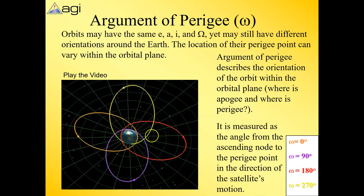You can see that all these orbits have the same period, but where their perigee is is totally different. That's called the argument of perigee. For red, it's zero degrees, and that's measured from the ascending node to the perigee point. That's the angle for the argument of perigee.